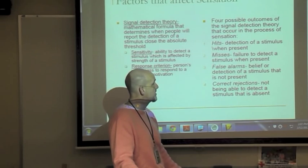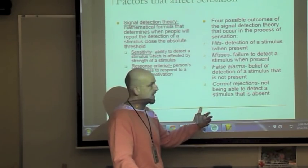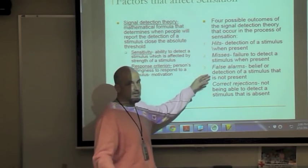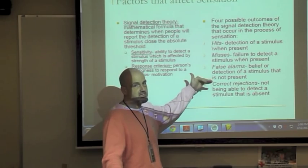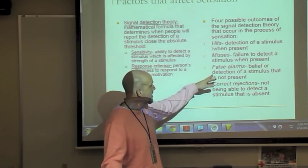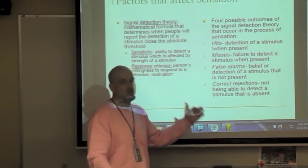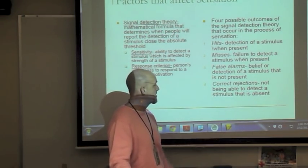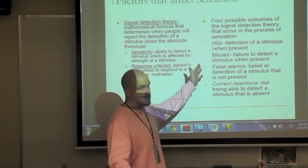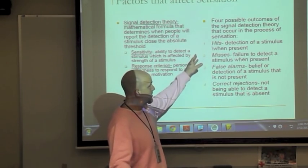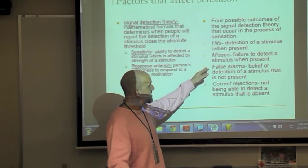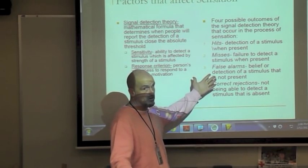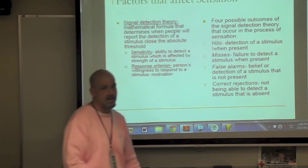The four outcomes from signal detection theory are: hits — correctly detecting a stimulus when present; misses — failure to detect the stimulus when present, connected to response criterion; false alarms — believing you detected a stimulus that is not actually present; and correct rejection — not detecting a stimulus that is absent. These are often used with hearing tests — when you say you heard a beep, that's a hit.